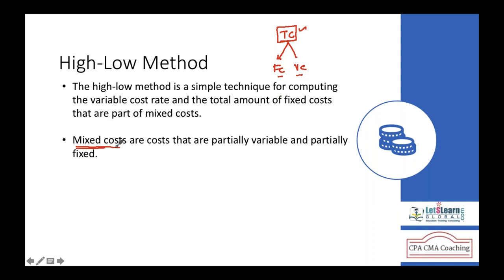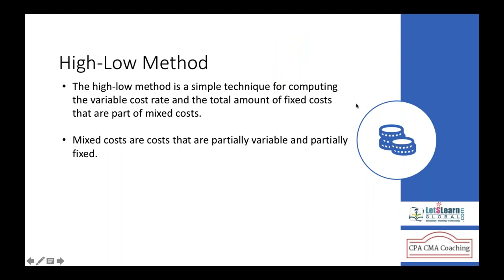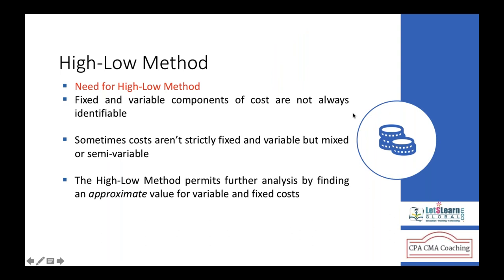We are calculating using the mixed cost both fixed and variable. Using total cost — that is called mixed cost — we are calculating both fixed and variable cost. For that, we use a method called the high-low method.